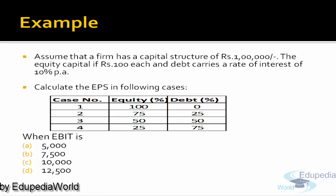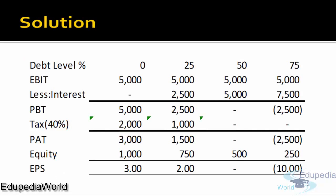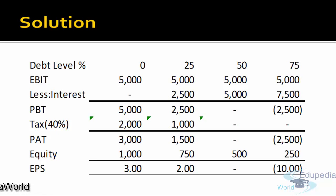So when the EBIT is 5,000, at a debt level of 0%, the earning per share is 3 rupees. When the debt level increases to 25%, there's a negative impact on EPS — the EPS falls to 2 rupees per share. Further, since the EBIT is only 5,000, the earning available to equity shareholders is 0, so EPS is 0. It further falls, and if the company introduces more debt, its EPS will decline.